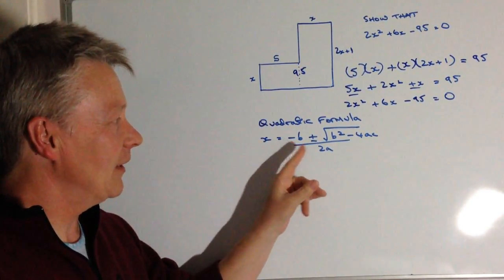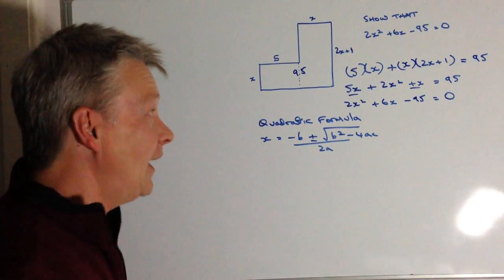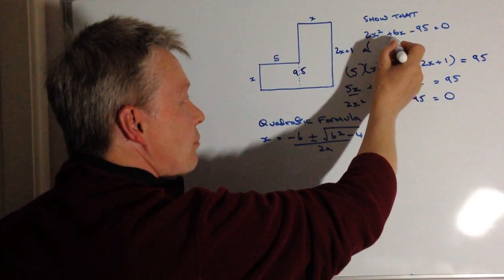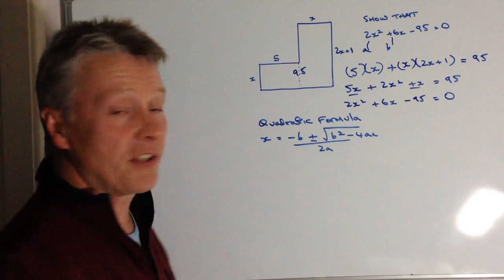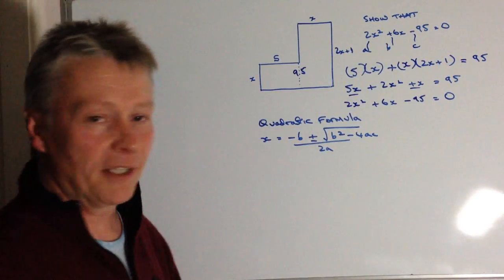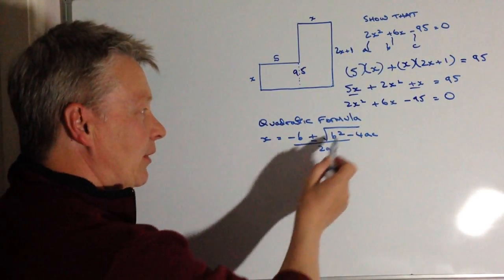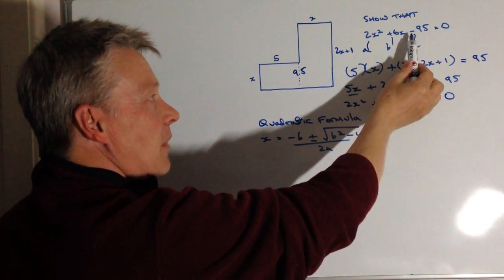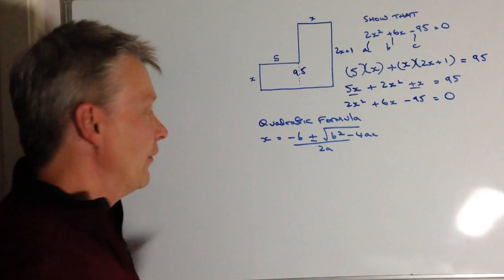So these values of A, B and C are actually, this is A, which is 2, this is B, which is positive 6, and this is C, which is minus 95. So I'm going to plug those into this equation. But do be a little bit careful, particularly with this minus 95 that you've got there.